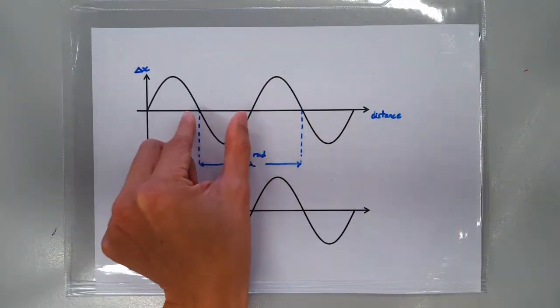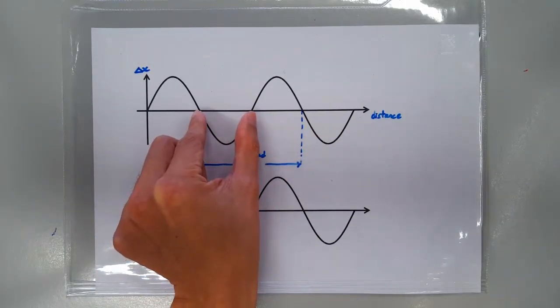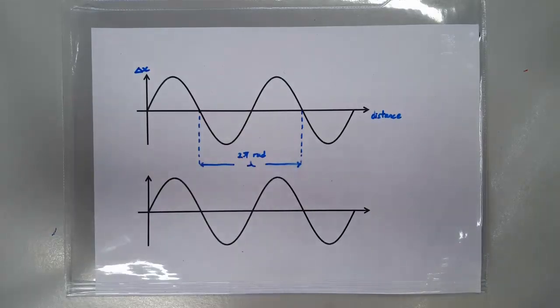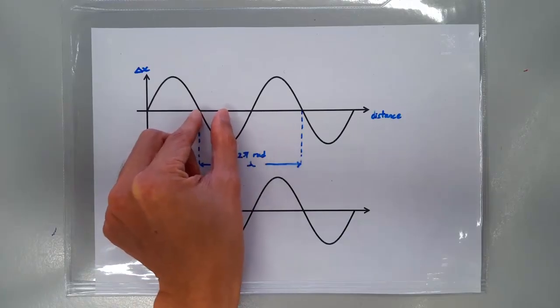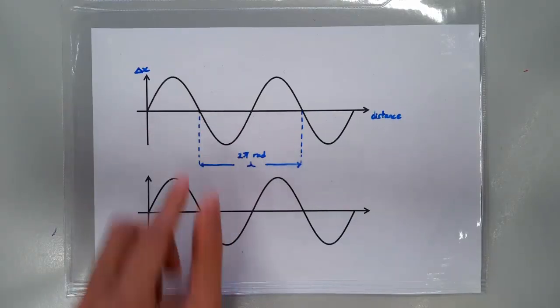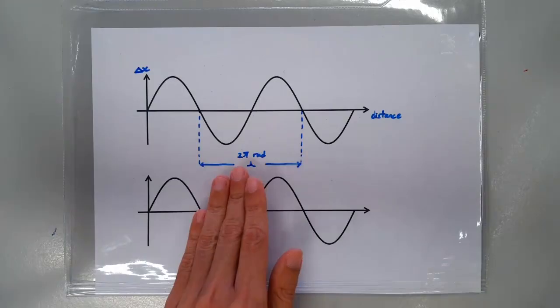Which means, two points which are separated by half a wavelength would have a phase difference of π radians. Likewise, two points which are separated by a quarter of a wavelength would have a phase difference of π/2 radians.